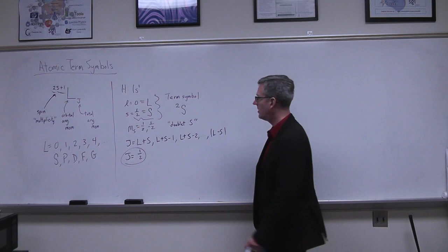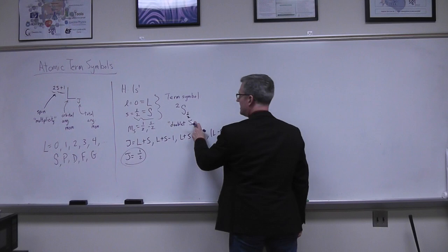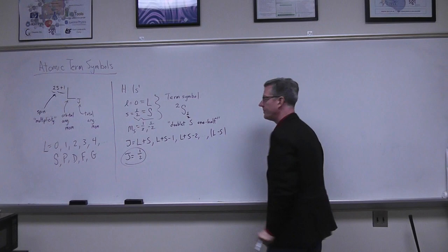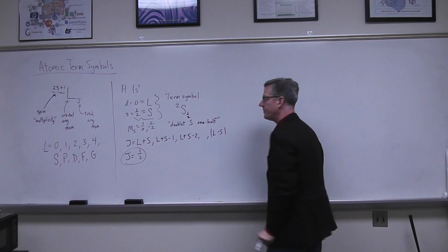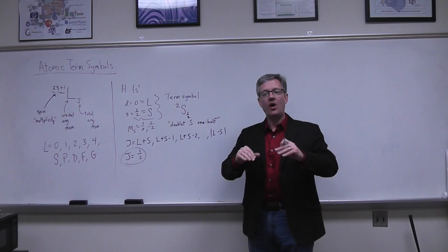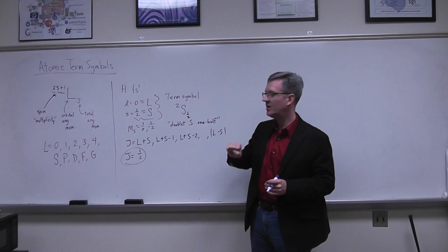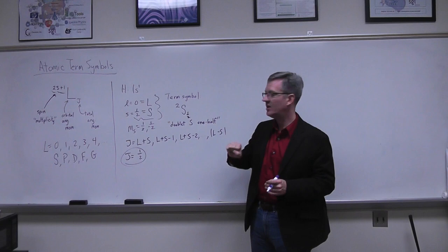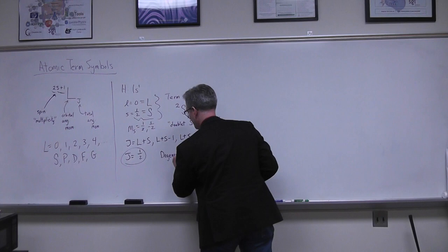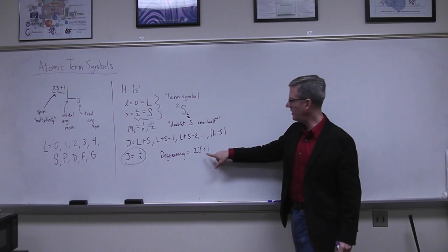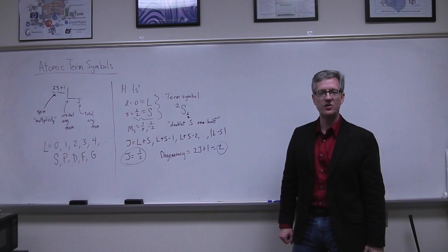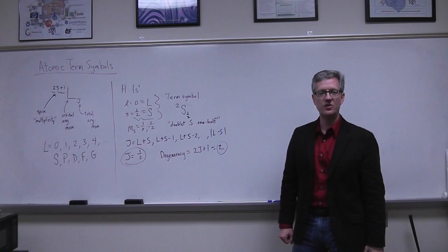So the complete term symbol is doublet S one-half. Each term symbol denotes a single energy level, collecting all the contributing wave functions. The degeneracy of the term symbol is 2J+1, which in this case is 2(1/2)+1 = 2. So the hydrogen ground state has a total degeneracy of 2.